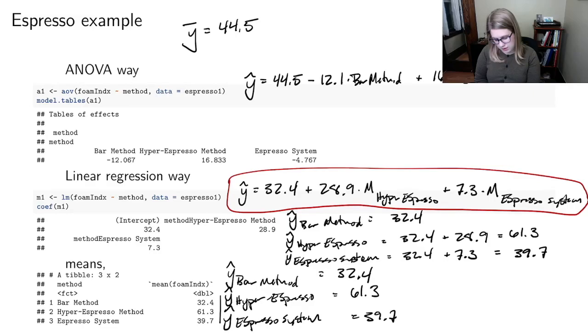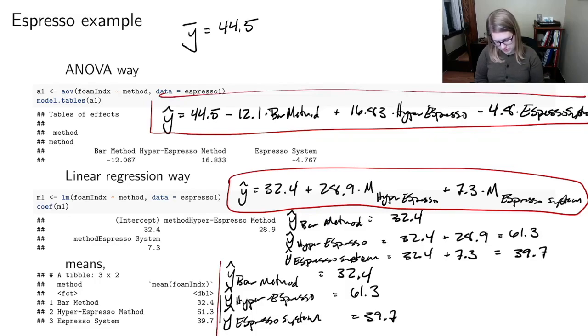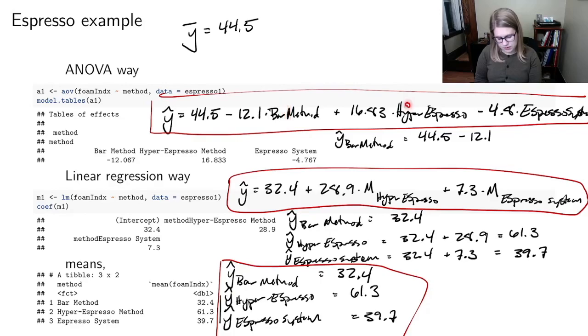Plus 16.83 times hyper espresso. And I'll move this. So I have some more room. Plus, nope, minus 4.8 times espresso system. And again, so this is kind of the ANOVA way to write out the equation. I'll just put a box around the means way as well. But just the same with the ANOVA way, I could do Y hat for bar method. And that would be 44.5 minus 12.1 times one, plus this is times zero, that's times zero. So those terms would drop away. And this would turn out to be that 32.4.